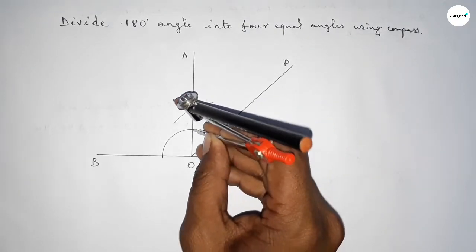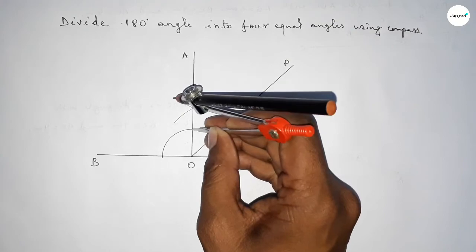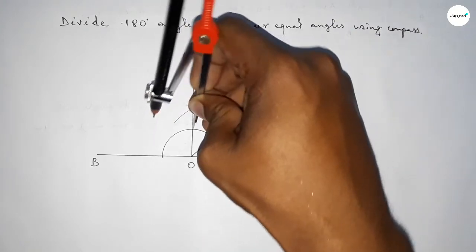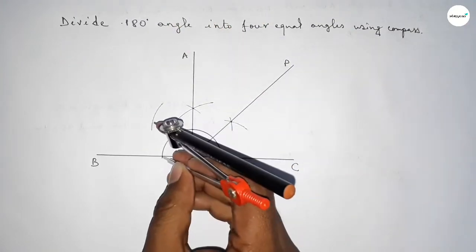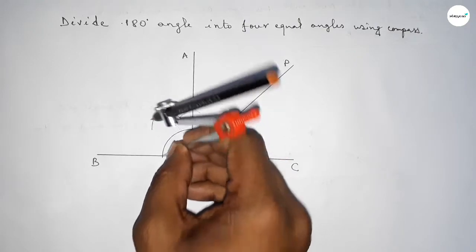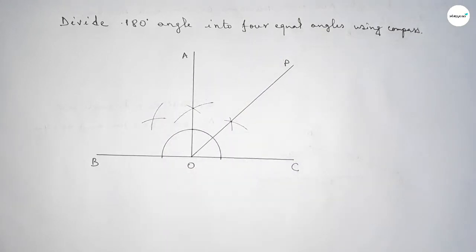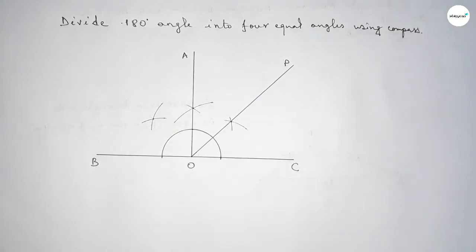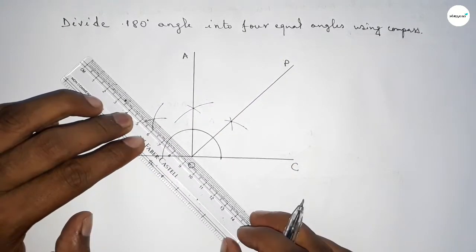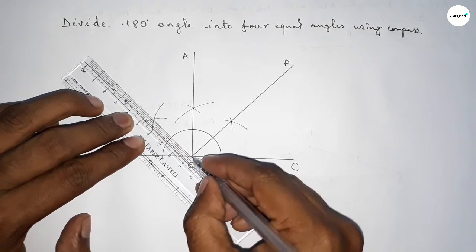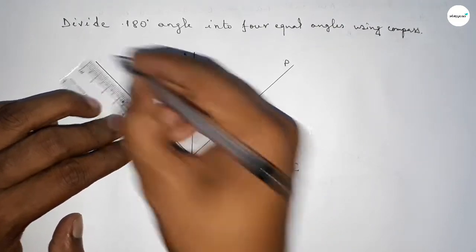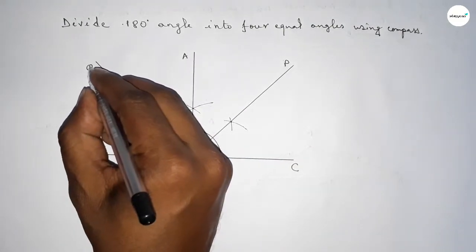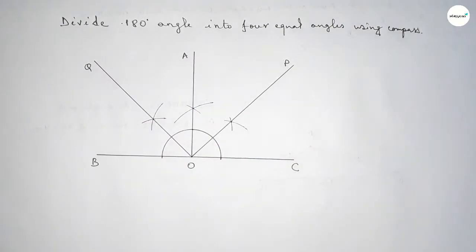Now we have to bisect angle AOB. Taking the same length and drawing an arc, then putting the compass here and cutting here so both curves intersect at a point. Joining this line and taking here point Q.